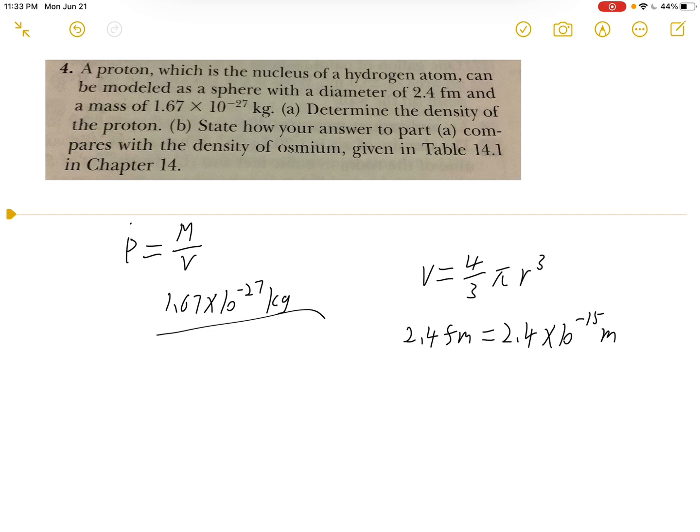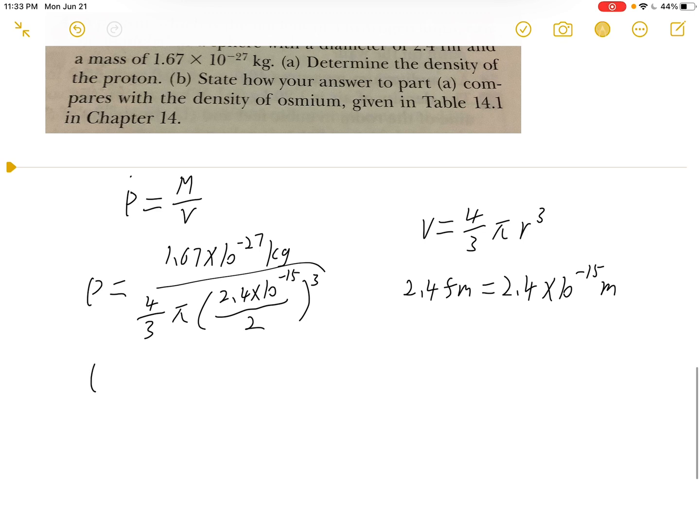So the volume is 4 third pi r is 2.4 times 10 to the negative 15 over 2 cubed. And that's going to be our density. So after the calculation, we will have approximately 2.307 times 10 to the 17th power kilogram per cubic meter. And this will be the answer for part A.